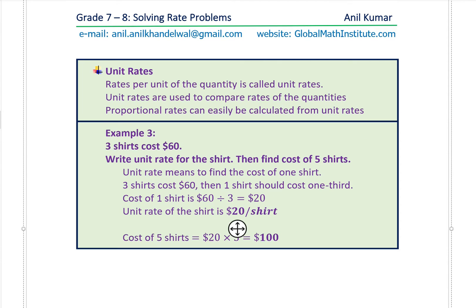Now let's talk about unit rates. Unit rates means rate per unit — per kilometer, per unit of time, per hour, per piece. Those kinds of rates are called rates per unit. Rates per unit of a quantity is called a unit rate.